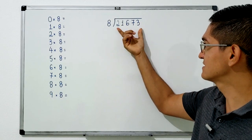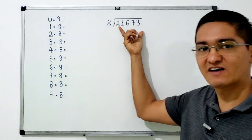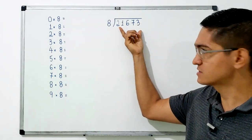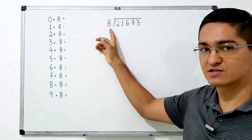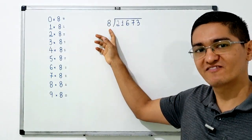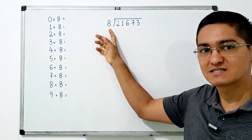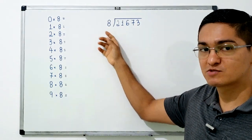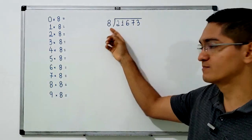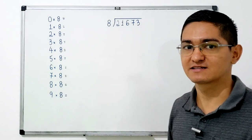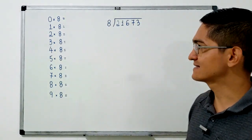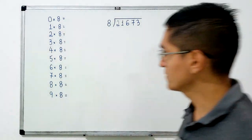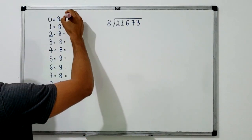In this division, 21,673 is the dividend — the value we will divide into equal parts — and 8 is the divisor, meaning we are going to divide into 8 equal parts. It's good that we know the multiplication table of the divisor before we start, so let's write down the multiplication table of 8.